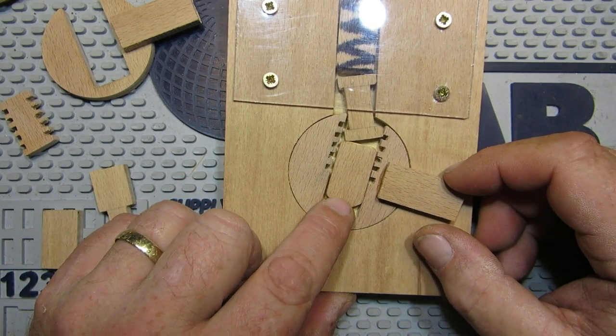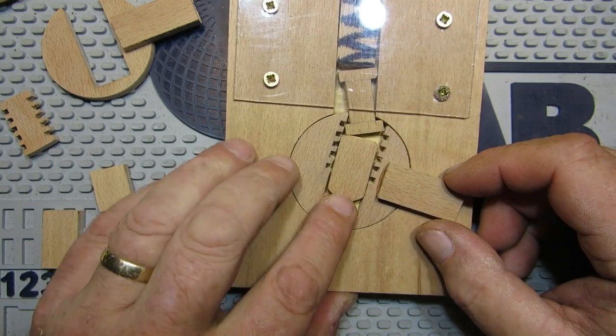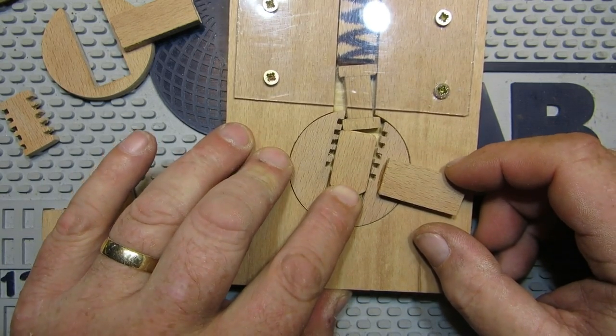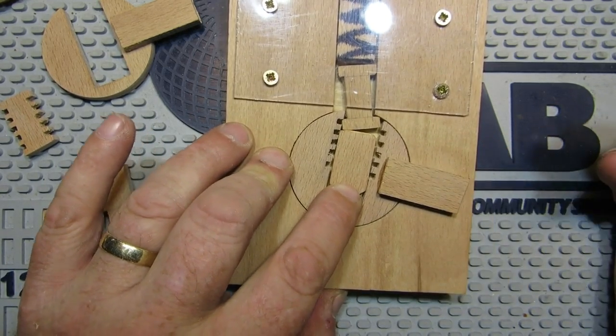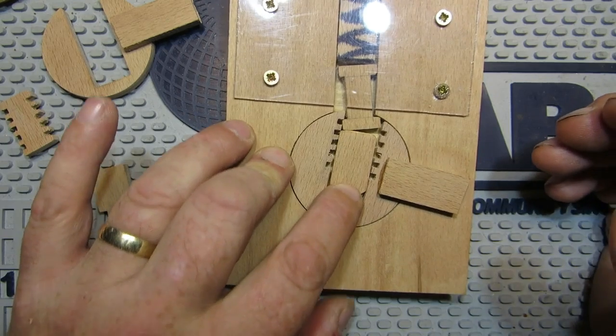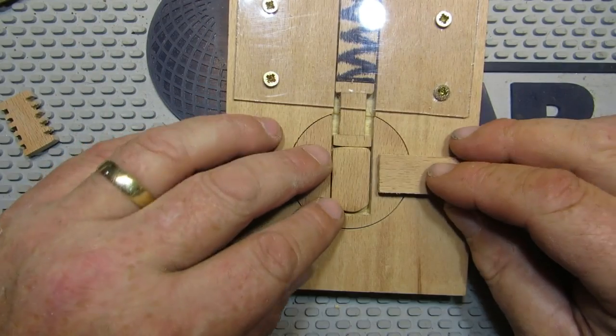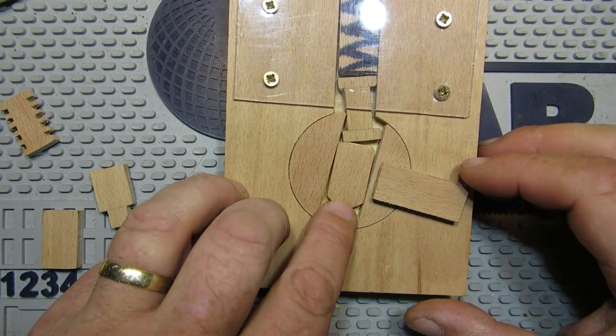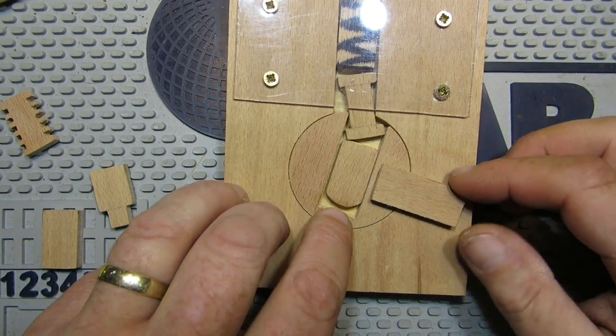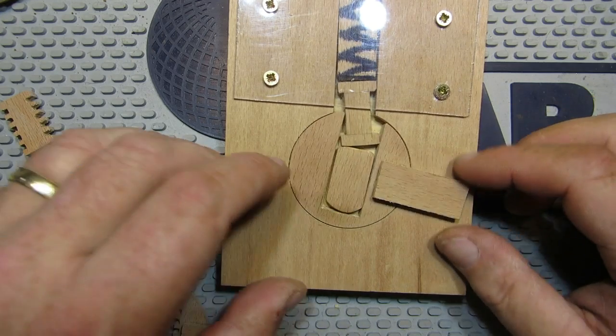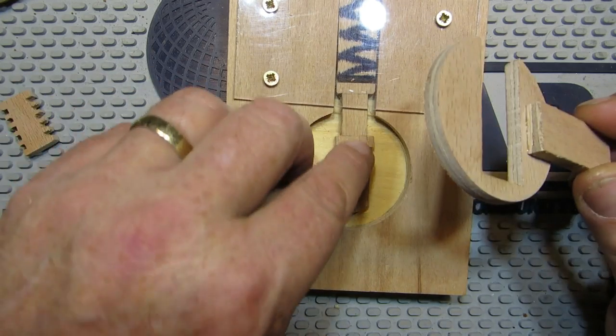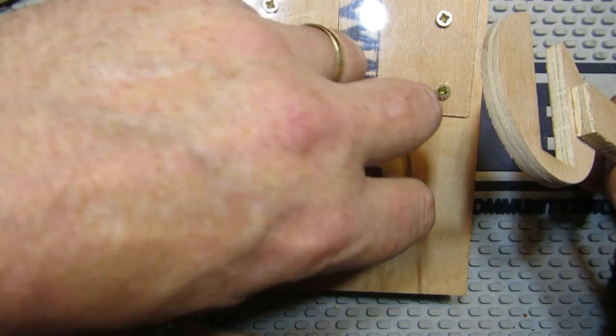As you can see, it doesn't matter how hard I push on there, nothing's happening. Whereas without that, if I push, it counter rotates itself. So that's how threading interacts.